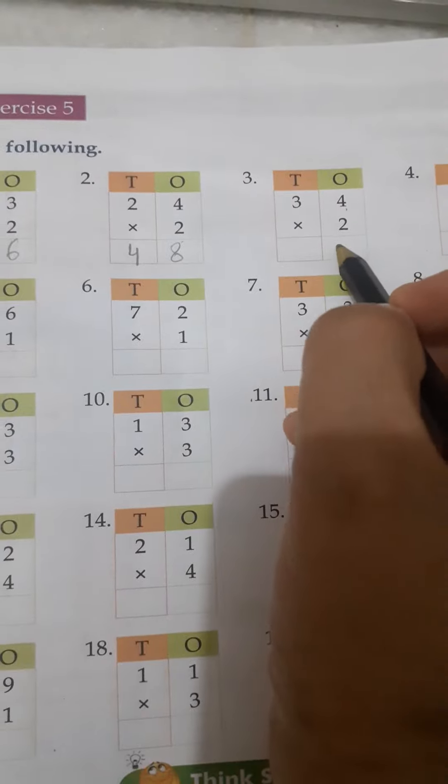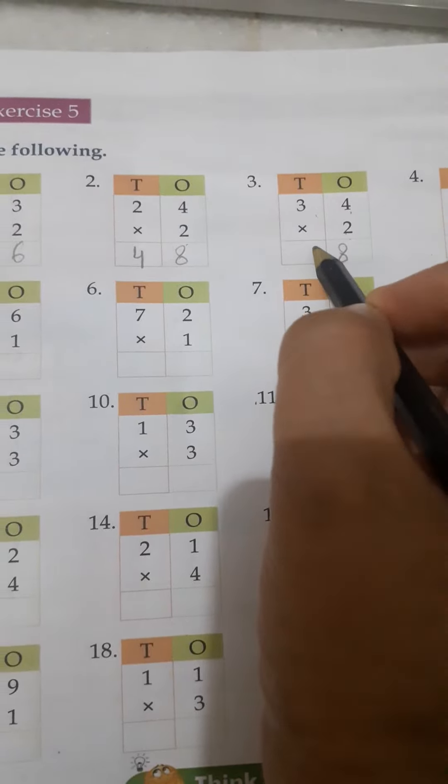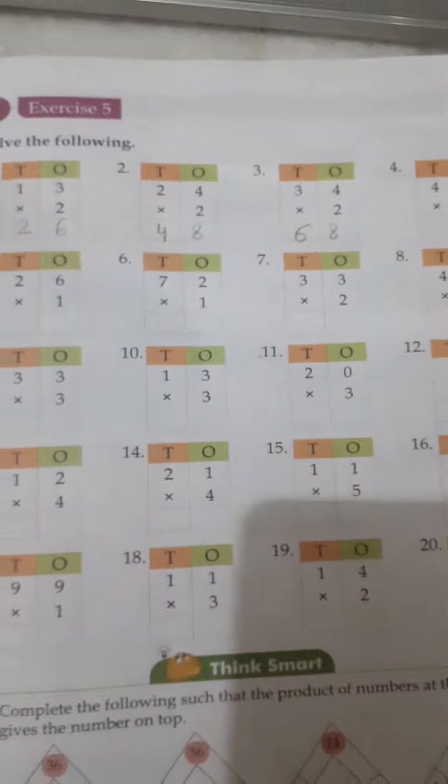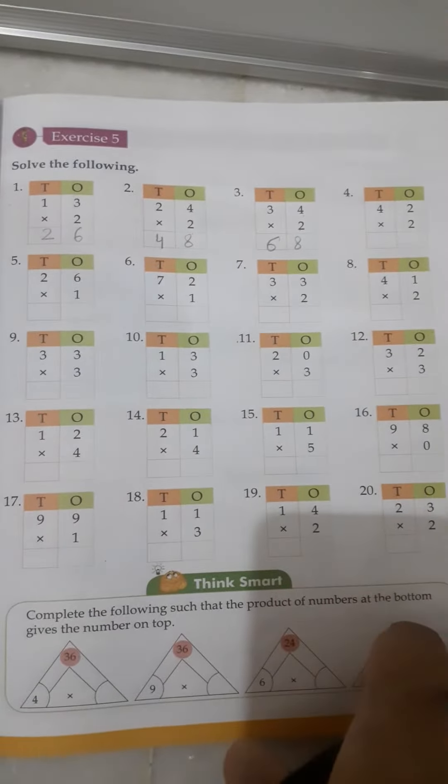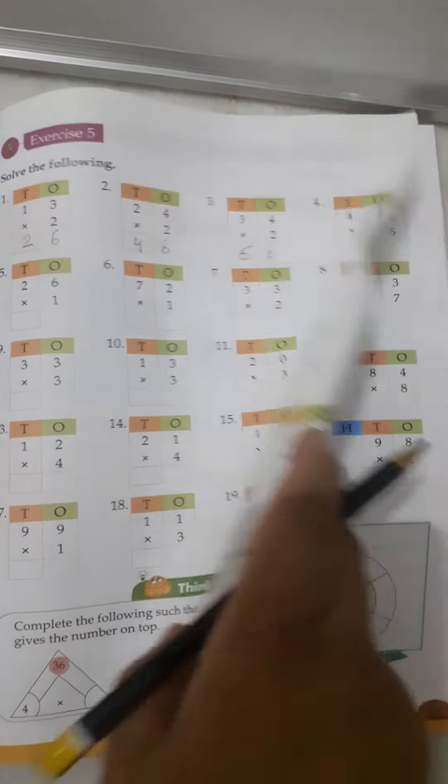2 fours are 8 and 2 threes are 6. Now as similar with this exercise you will do in the same way. All the questions are similar and you will complete it in the book itself.